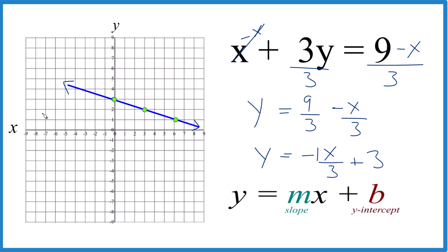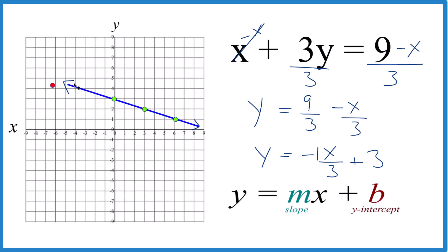You could also do it this way because if you said x was 0 right here, then it'd be 3y equals 9. So y would equal 3. So x is 0, y is 3 right there, just like we had before.